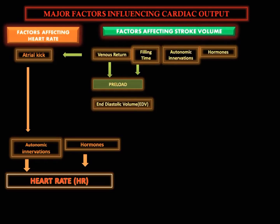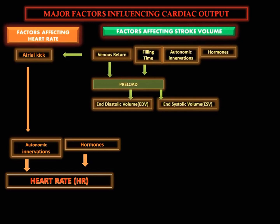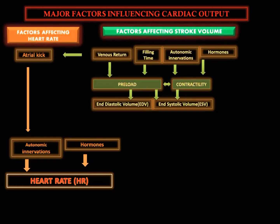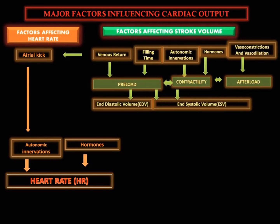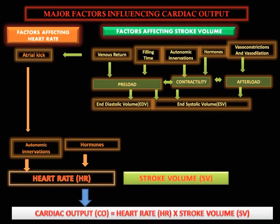Venous return determines preload and the atrial reflex. Filling time, which is directly related to heart rate, also determines preload. Preload then impacts both end-diastolic volume and systolic volume. Autonomic innervation and hormones largely regulate contractility.